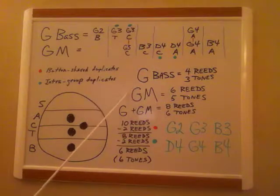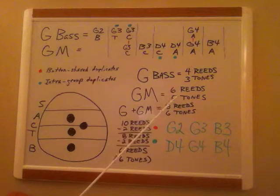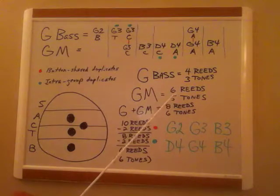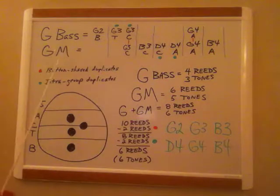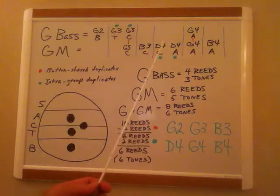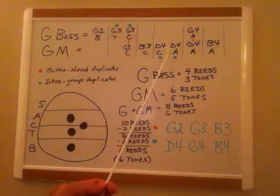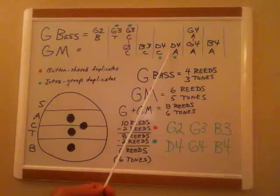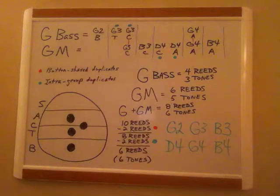So what happens is, though four reeds are being used for the G bass button, you're likely going to hear only three tones. Okay? Now, on the G major button, those six reeds are in play, you're likely only going to hear five tones, unless you have that super hearing, which you probably don't. Because in the reeds used for the G major button, the D4 reed in the contralto reed set and the D4 reed in the alto reed set are being sounded simultaneously. So you probably can't distinguish between the two, right?